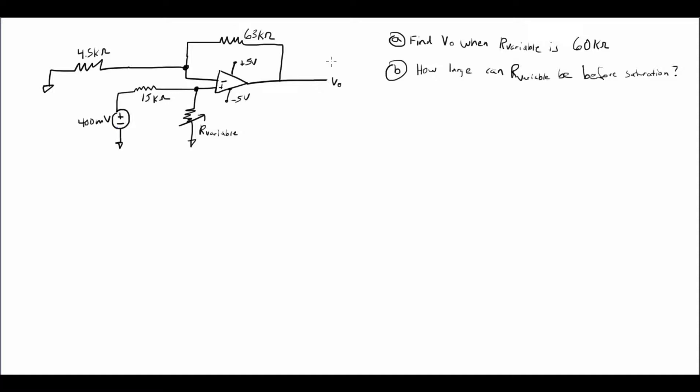I have a rheostat or a potentiometer, whatever you want to call it, here. So I actually am varying this resistance. And I have a variety of resistors. I have a feedback resistor. And this time the power rails are a little lower than usual. They're only 5 volts. So yeah, let's just dive straight into it.